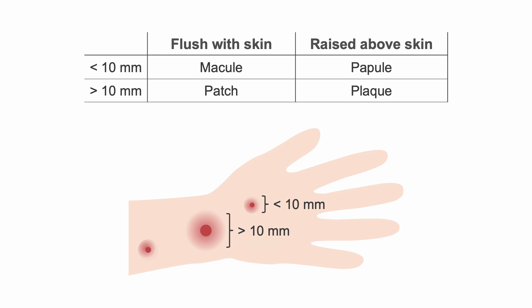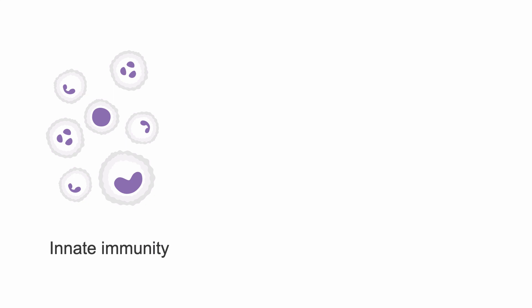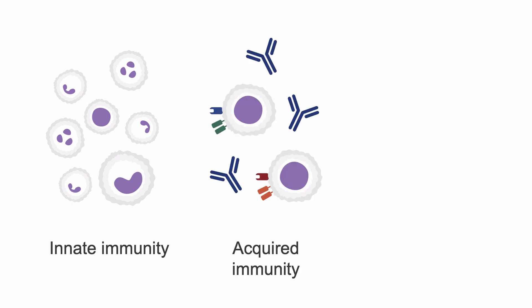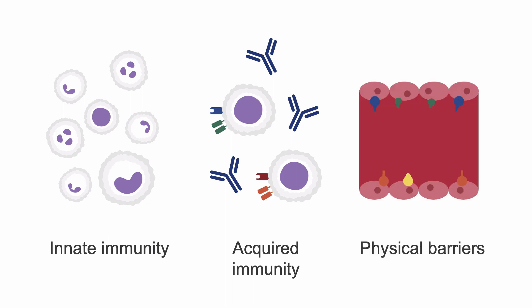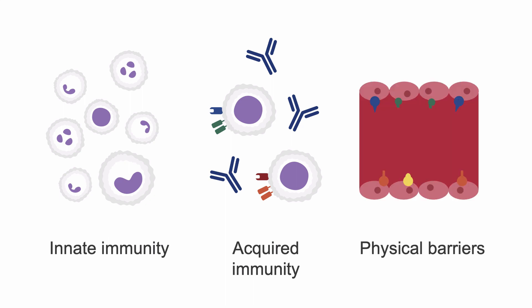Another way is to organize the disorders based on classical categories of inflammation, such as disorders of the innate immunity, disorders of acquired immunity, and disorders of physical barriers to pathogens.